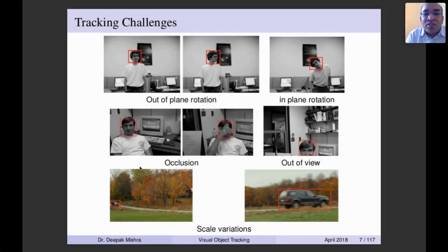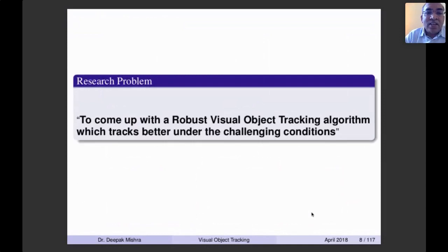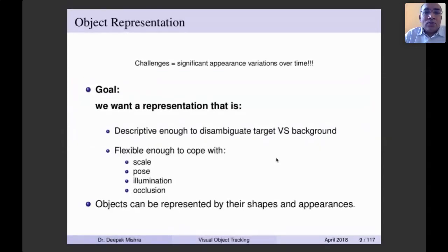Occlusion is another problem — people or objects may occlude the target so you don't have a full view in subsequent frames. Scale is also a challenge: with a static surveillance camera, an object appears smaller when far and larger when it comes close. All these are important challenges in designing a robust visual object tracking algorithm. No single tracker can overcome all possible problems, so it remains an open research area with many algorithms being developed.